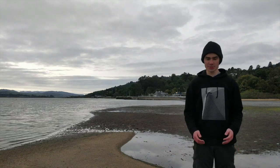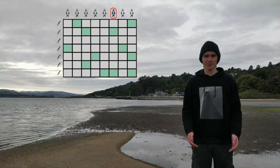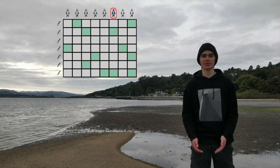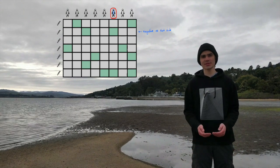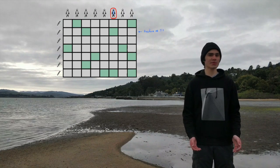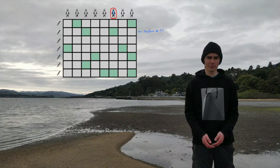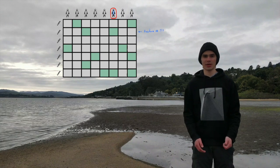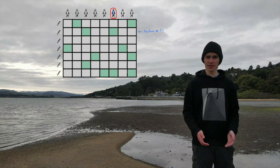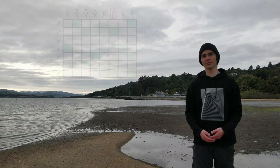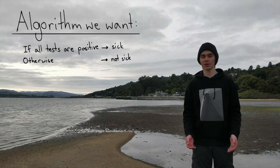Now suppose we have some testing strategy. Let's look at a specific person. Obviously, if any of your tests are negative, then you're not sick. But even if all of them are positive, that doesn't necessarily mean that you're sick — there could be some other sick person participating in every one of your tests. However, it would be nice if all positive tests meant that you're sick. Then the algorithm for determining who's sick would be very simple: you're sick if and only if all your tests come back positive.